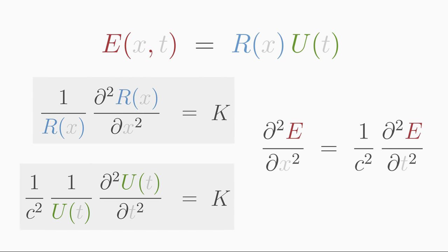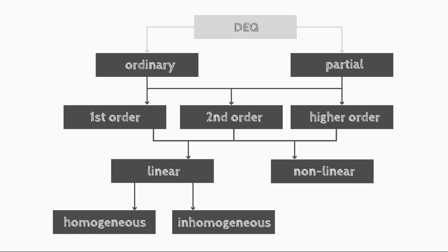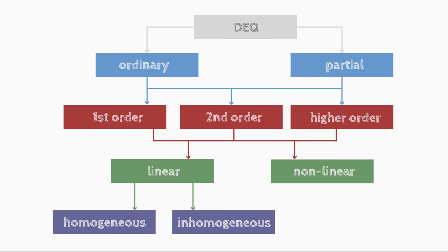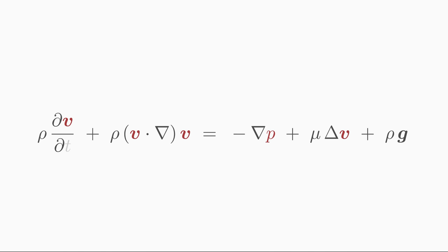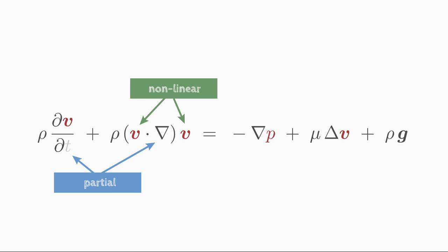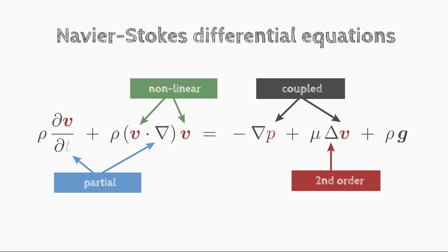Now you have learned everything necessary to classify and to solve simple differential equations: separation of variables for ordinary homogeneous first-order equations, variation of constants for ordinary linear first-order equations, exponential ansatz for linear equations of arbitrary order with constant coefficients, and separation ansatz for partial differential equations. There are of course more classifications and solving methods — entire books are devoted to them. Some differential equations are so complex, like the Navier-Stokes equations, that numerical solving by computer is the best approach. That's another big topic for the next video.